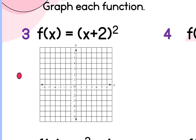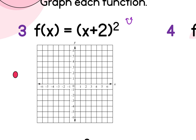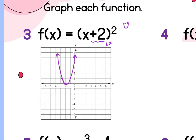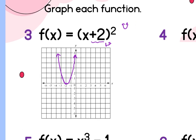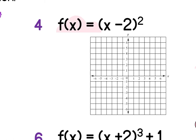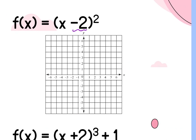Example 3: x plus 2 squared. It's x squared, so the parent is a parabola. The plus 2 inside parentheses causes a shift left 2. Go left 2, plot the vertex, go up-and-out the ones, and draw the U. Example 4: x minus 2 squared — the minus 2 inside means shift right 2. Go right 2, up-and-out the ones, draw the parabola. Example 5: x cubed minus 1. That's the cubic shape — the minus 1 is outside parentheses, so it's a vertical shift down 1. Shift the origin point down 1 and draw the cubic.